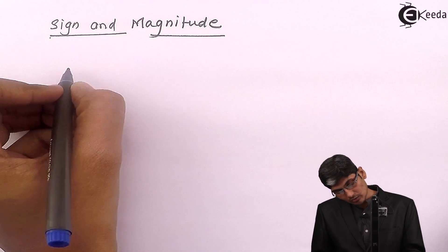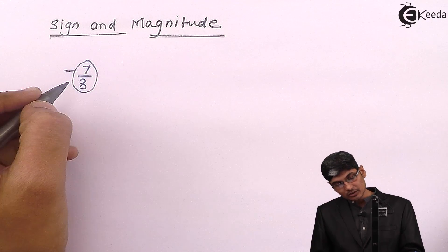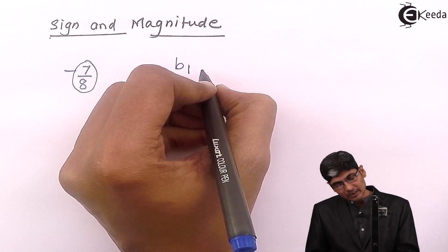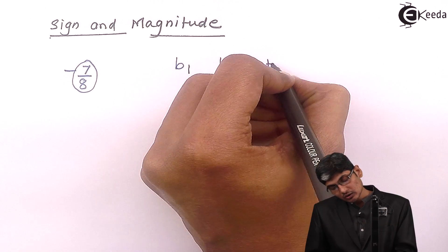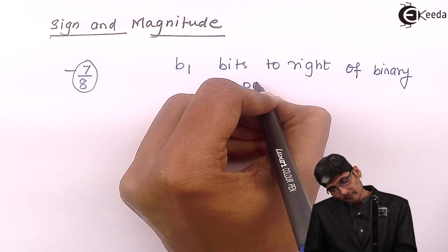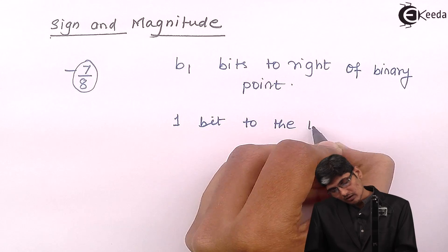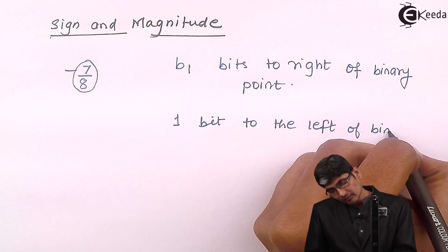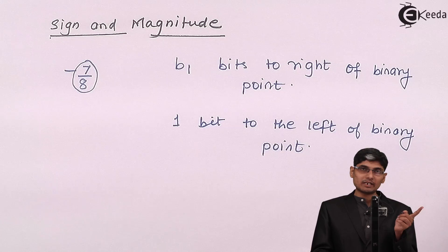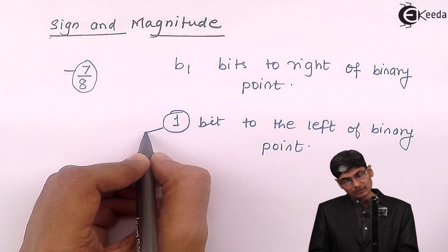So if suppose I have a minus seven by eight number, I will represent first its magnitude and give one bit for representing the sign. We are going to represent B1 bits to the right of the binary point and use one bit to the left of the binary point. We have one bit on the left and B1 bits on the right, and this one bit will be used as the sign bit.